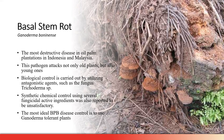Trichoderma is known as an antagonistic agent that can control Ganoderma boninense. Synthetic chemical control using active ingredients was also reported to be unsatisfactory, so synthetic chemicals are not used for Ganoderma boninense control. We have to develop other control techniques. The most ideal disease control is to use Ganoderma-tolerant plants — we have to develop varieties or clones of oil palm that are resistant or at least tolerant to Ganoderma boninense, and also use antagonistic agents like Trichoderma.